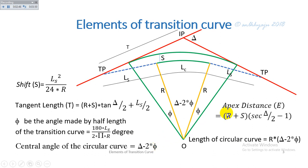The apex distance is the distance from the intersecting point to the curve and is given by: apex distance = (R + S) sec(delta/2) − R.